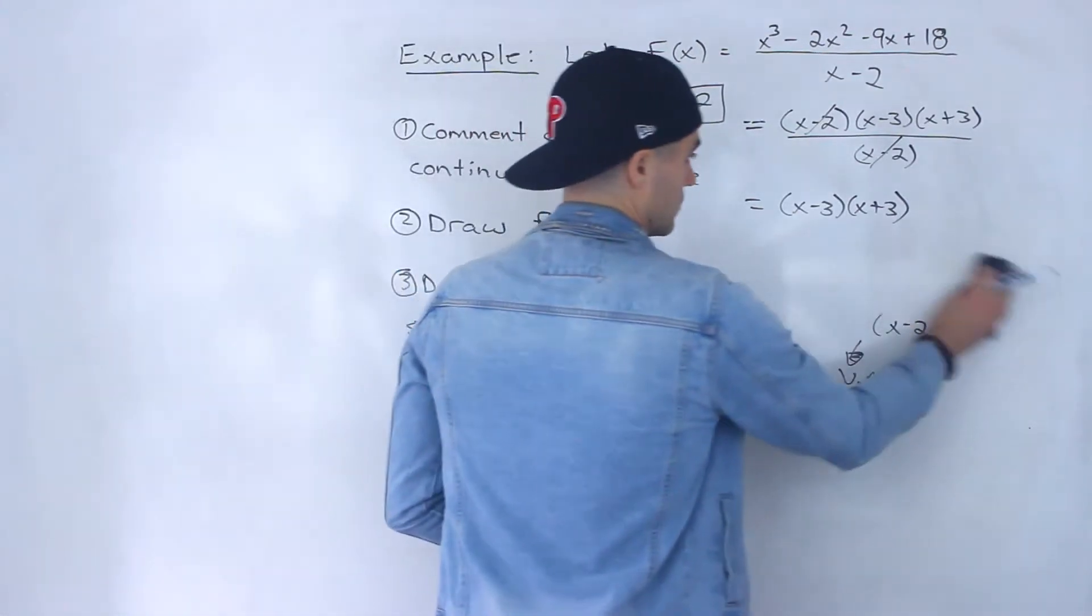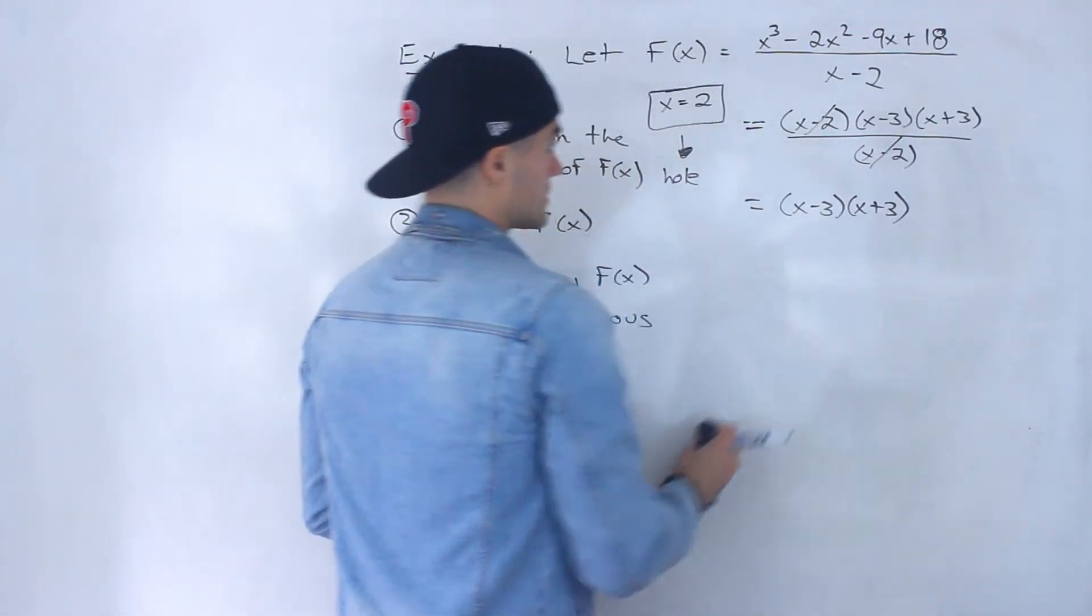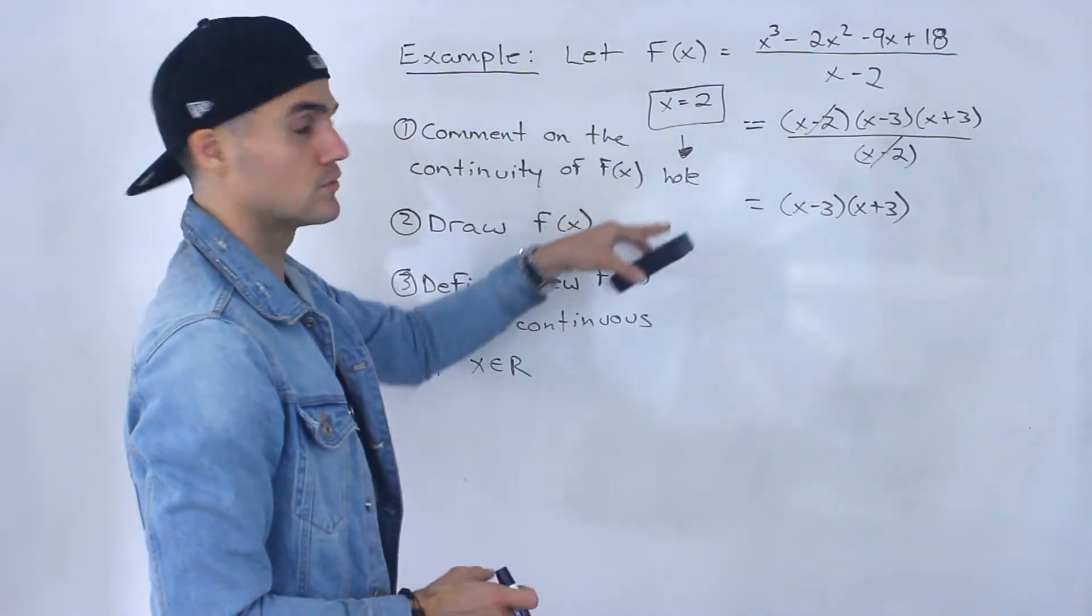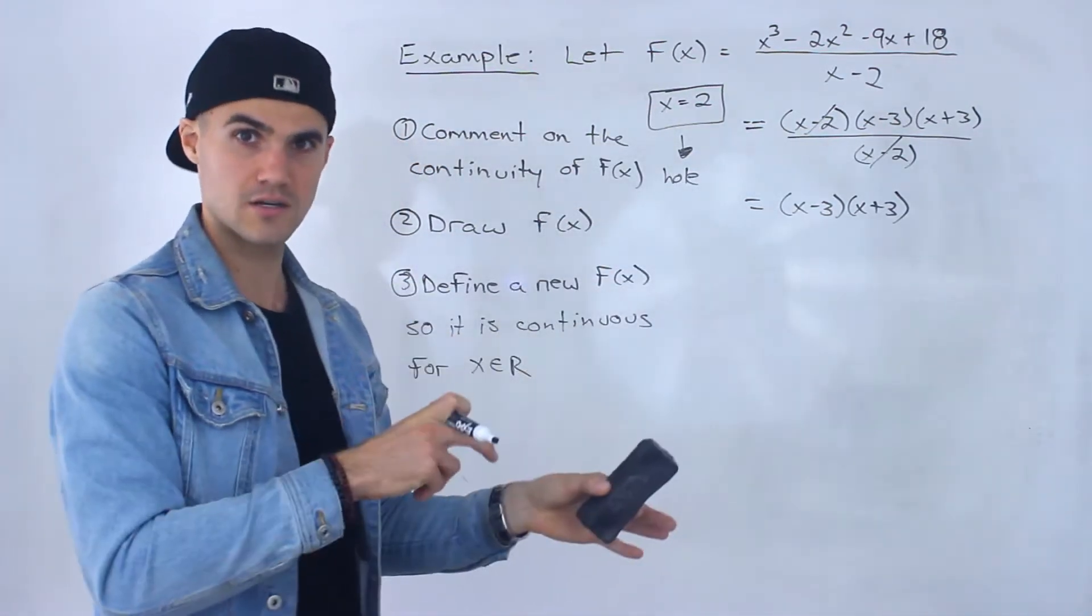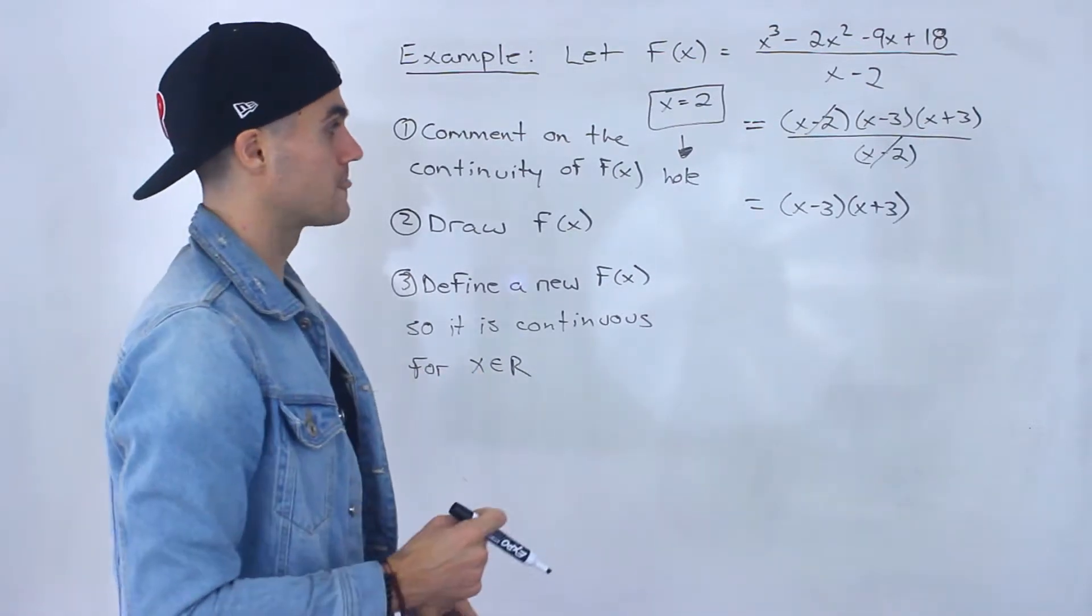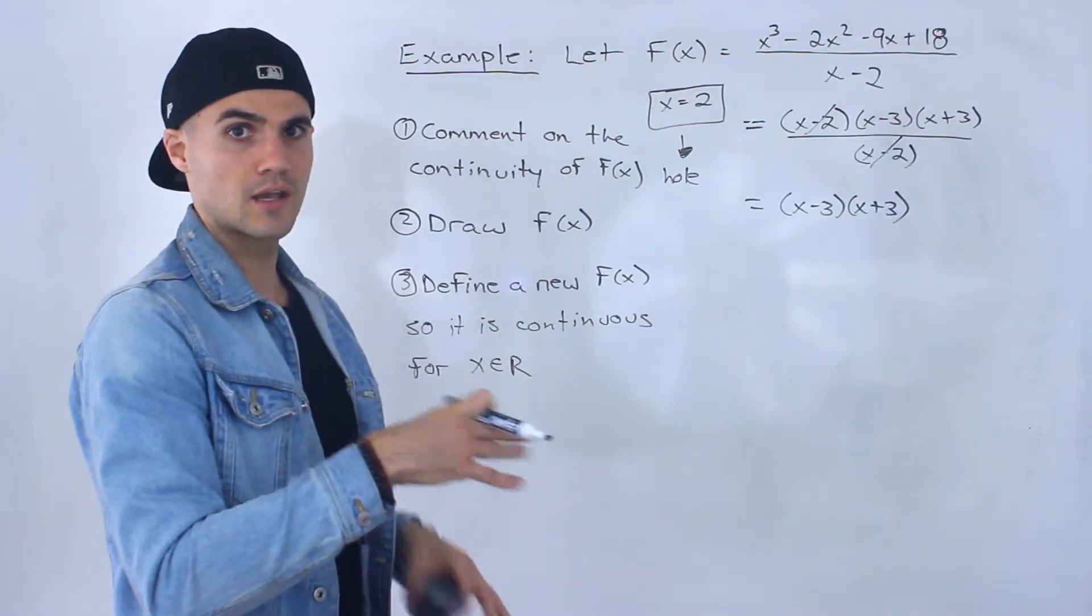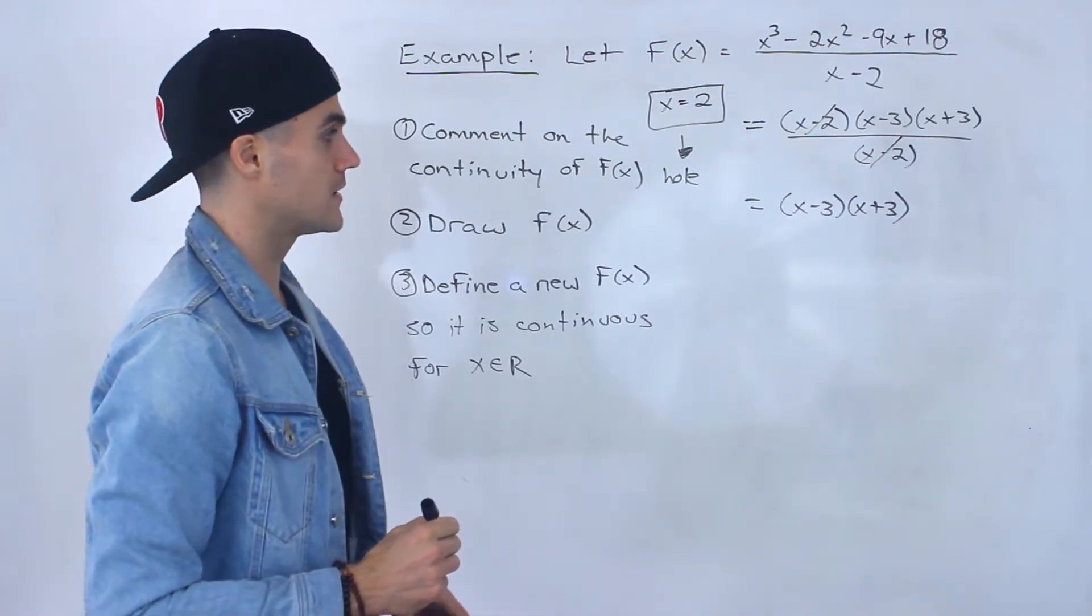So what happens is at an x value of 2, the function is discontinuous because there's a hole or there's a point discontinuity or it's a removable discontinuity. Different ways you can describe it.